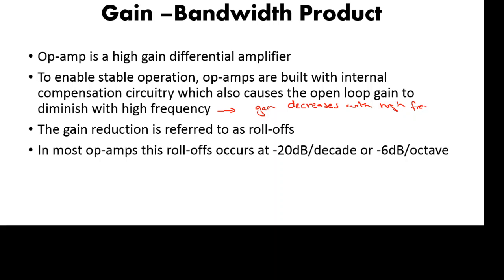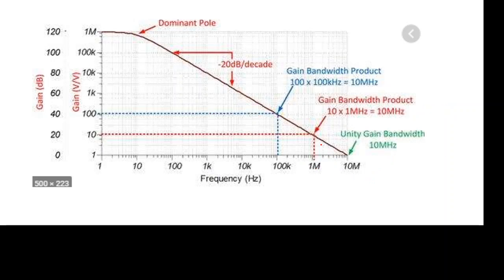If we increase the frequency of the operational amplifier, the gain will decrease because of this internal compensation circuitry. This gain reduction is referred to as roll-off. The typical roll-off in most operational amplifiers is minus 20 dB per decade, or minus 6 dB per octave.